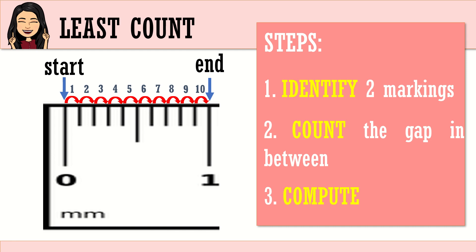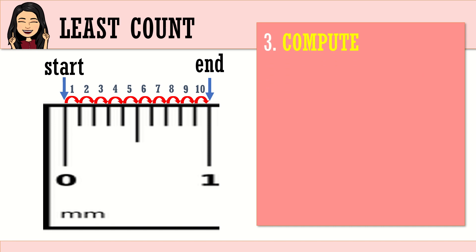The third one is we will now compute for the least count, making use of the information in our step 1 and 2. Let's now compute. To compute, the numerator will be making use of the start and end. This time, we will get the difference. We will start, we will be making use of the end value minus the start value. So, here, 1 minus 0, that's end minus start. Divided by, our denominator here would be 10. Where did we get 10? 10 here is from here. Remember the small divisions in between your two markings. Do you understand? Good. So, I repeat. Your numerator is the difference between your end and start, and your denominator is the number of divisions in between your two markings.